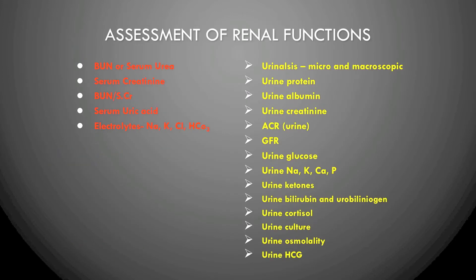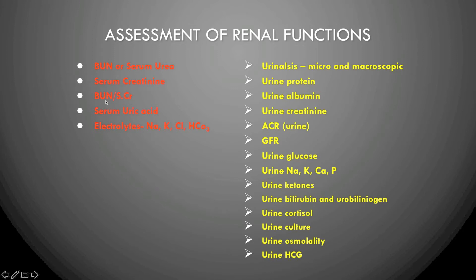Renal function is assessed through blood and urine tests. Important blood tests include serum urea or blood urea nitrogen (BUN), serum creatinine, the BUN-to-creatinine ratio, serum uric acid, and serum electrolytes like sodium, potassium, chloride, and bicarbonate.